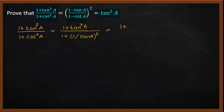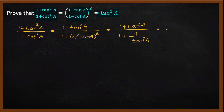Numerator: tan square a. Still 1 plus 1 divided by tan square a. Denominator: tan square a plus 1 divided by tan square a.